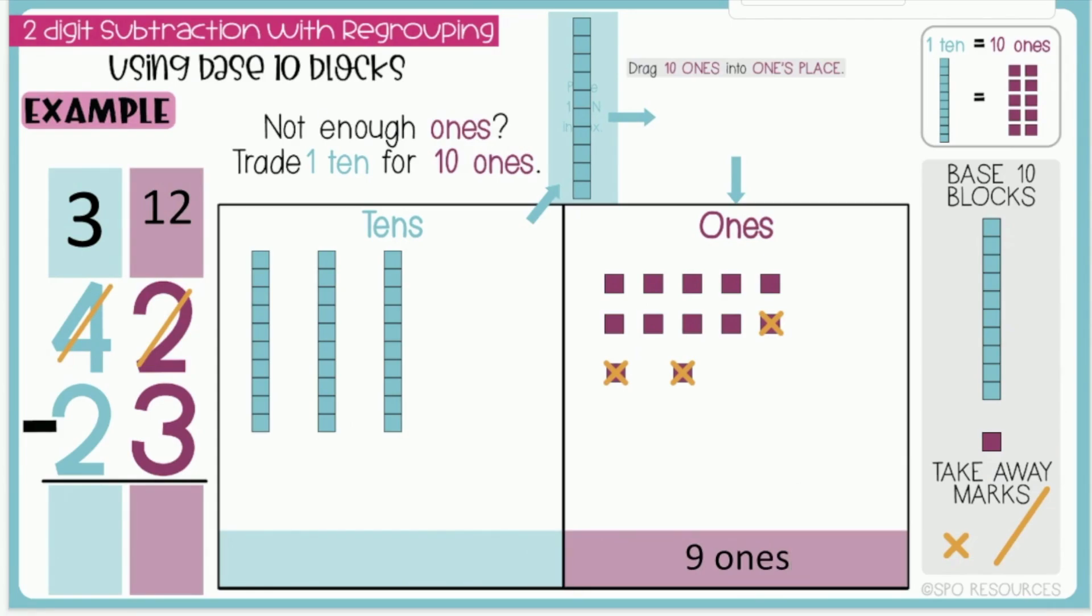Next, I will subtract my 10s. I have three 10s, and I need to take two 10s away. I am left with one 10, so I will type one 10 in the box.